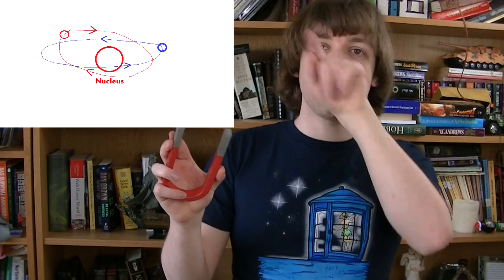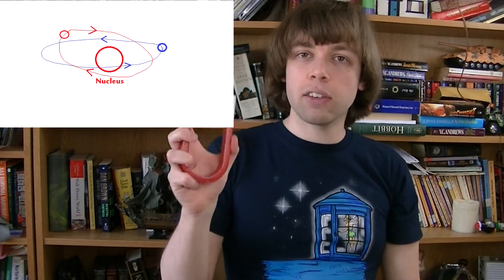Electrons in the atoms that make the soap are orbiting around the nucleus, they're moving. In a lot of non-magnetic materials, they have orbits going both ways. One electron's going one way, another electron's going the other way, and it all cancels out.